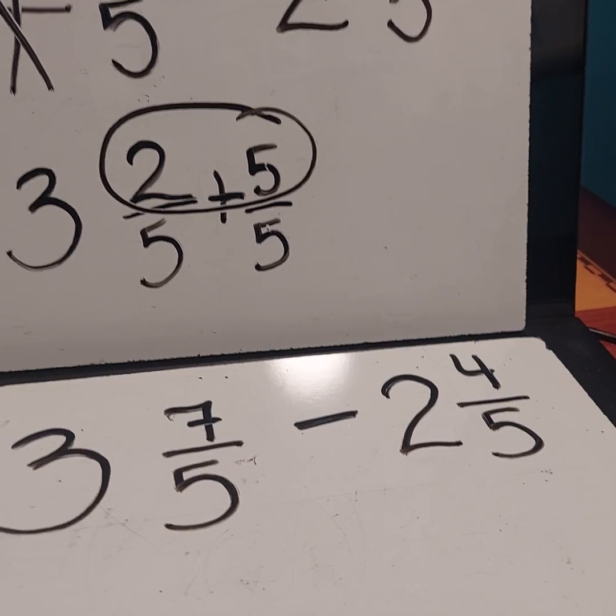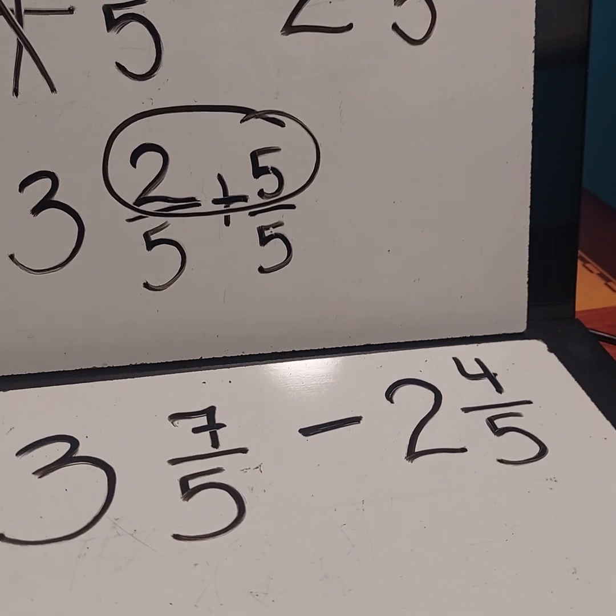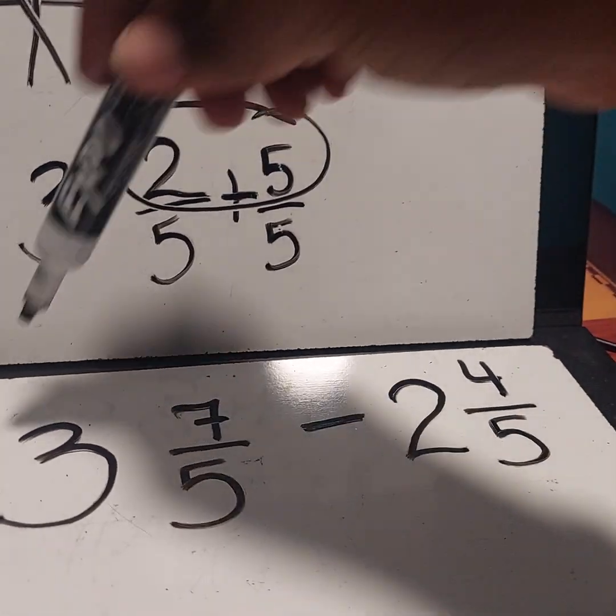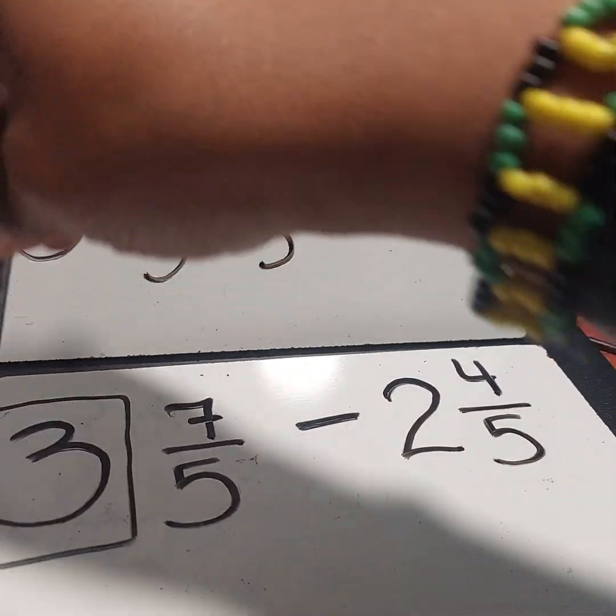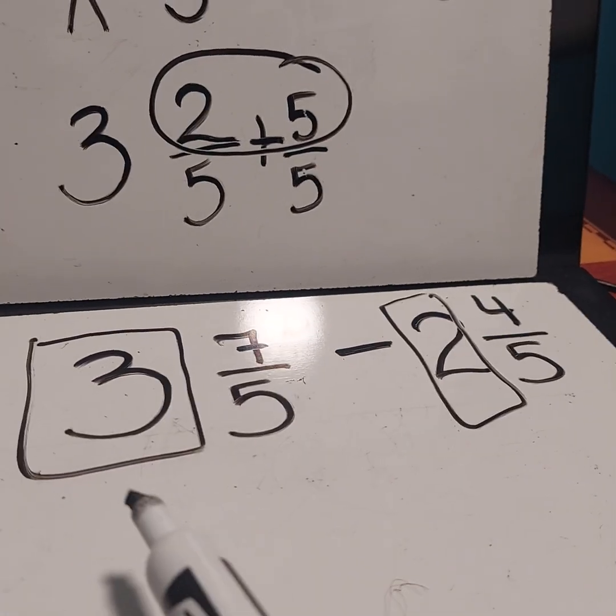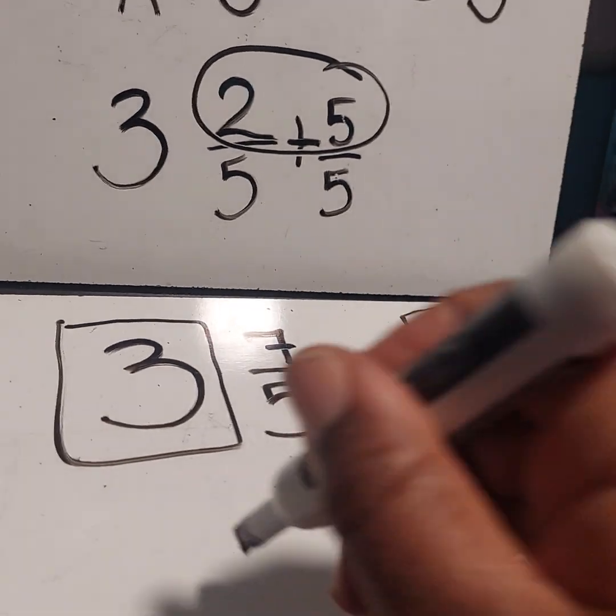So now let's go ahead and follow up my procedure. I am going to subtract the whole numbers. I'm going to go ahead and mark that. That's my whole number. I'm going to subtract that first. 3 take away 2 is going to give me 1.